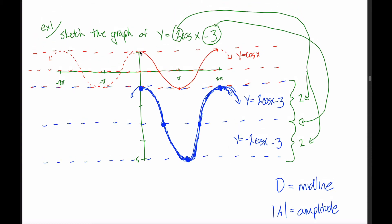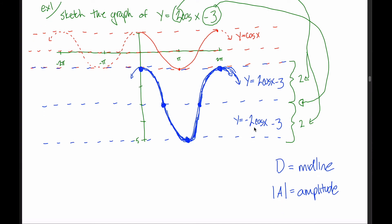Almost — the negative flips the orientation. The cosine graph normally starts at the top at its maximum value, but a negative reflects the graph vertically, moving that starting point from the maximum to the minimum. So for y equals negative 2 cosine of x minus 3, put the dotted lines in the same spot but start down at the bottom. All maximums switch to minimums and all minimums switch to maximums; points on the midline stay on the midline.